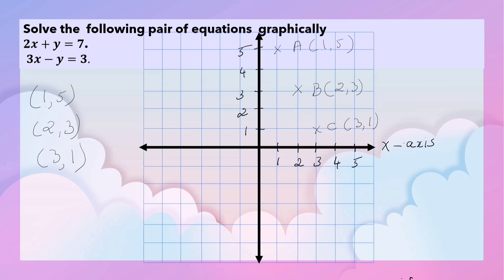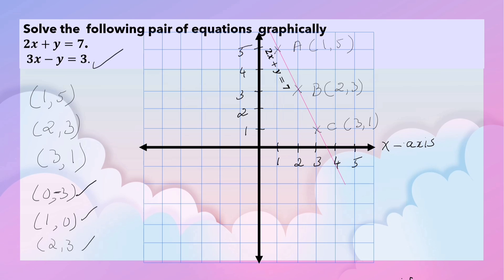The third ordered pair is 3 comma 1 — let this point be C. Now joining points A, B, C gives the line for equation 2x plus y is equal to 7. Now these are the ordered pairs of points for the equation 3x minus y is equal to 3.